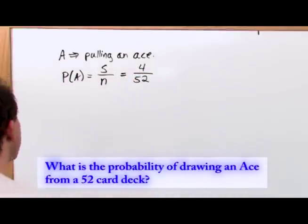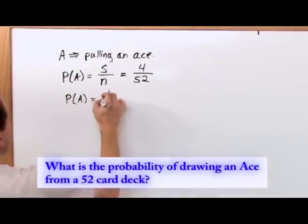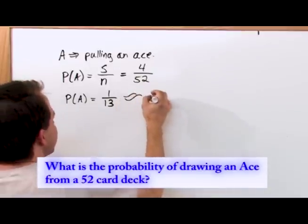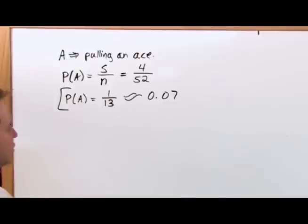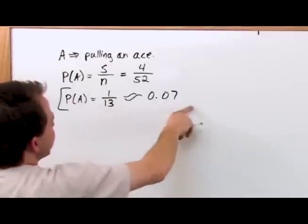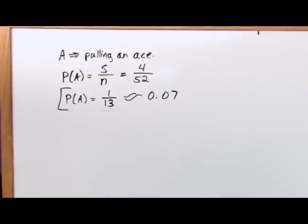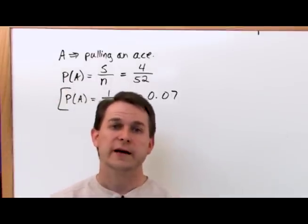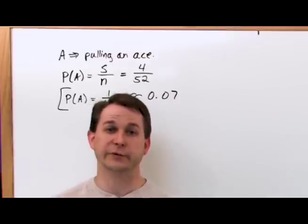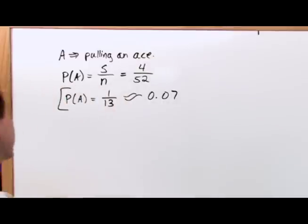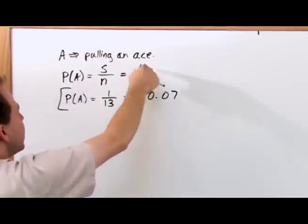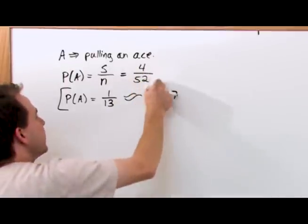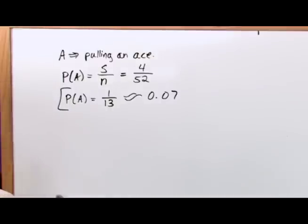The answer is 4/52, which simplifies to 1/13. If you put that in your calculator you get approximately 0.077. Usually we leave probabilities as fractions when we can. The chance of pulling a single ace out of a deck is less than 1 in 10 — it's 1 in 13. So about 1 in every 13 times you shuffle the deck and draw a card, you'll draw an ace.